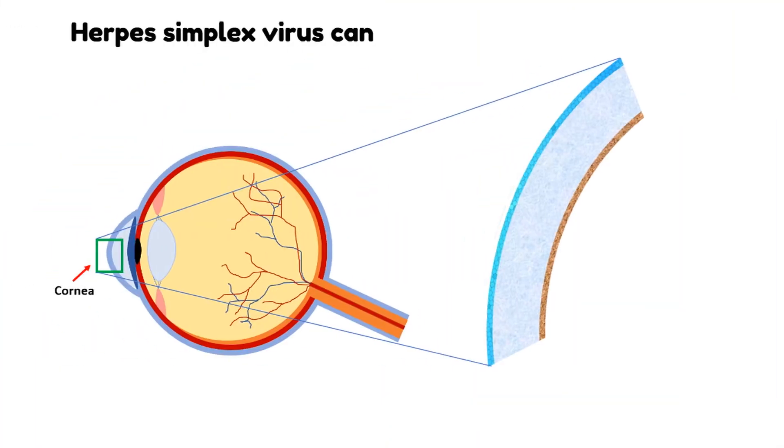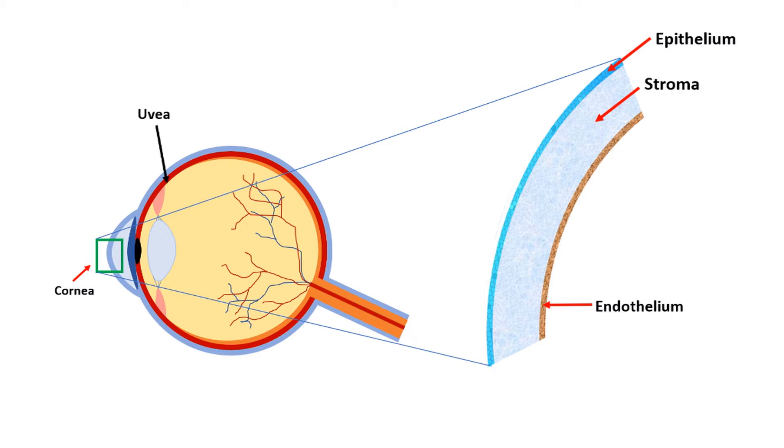Herpes simplex virus can affect differently each layer of the cornea: the epithelium, the stroma, the endothelium, and the uvea.